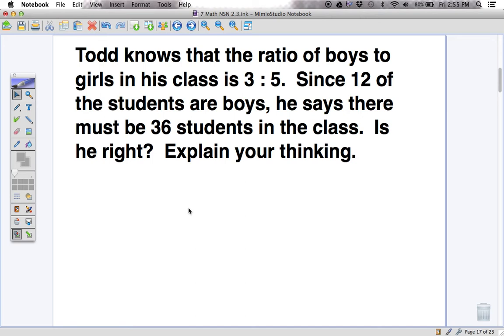So we're going to go through this question. Todd knows that the ratio of boys to girls in his class is 3 to 5. Since 12 of the students are boys, he says there must be 36 students in the class. Is he right? Explain your thinking.